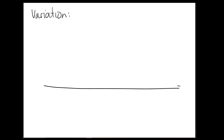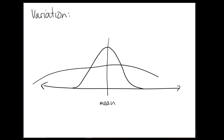First up is variation. We've discussed this in our episode on summary statistics — a statistic giving the average of something for a population is not particularly useful on its own, because you have no way of knowing how much variation there is around that central tendency. If we have a statistic on an x-axis with a given mean, one distribution might be tightly peaked around that mean, while another is more spread out. These have the same center, the same mean, but different levels of variation.